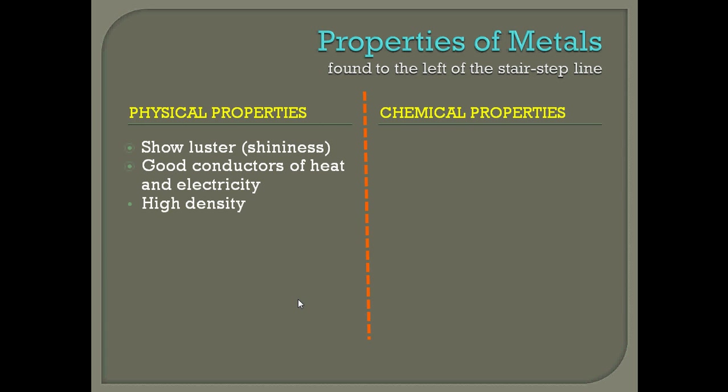Next, metals are going to have a high density. Density is a ratio of mass to volume, so a high density means you have a lot of mass compared to its volume — a lot of mass compacted into a smaller amount of volume. If you try to pick up a metal, you're going to feel that heavy weight, and that's because it has a high density.